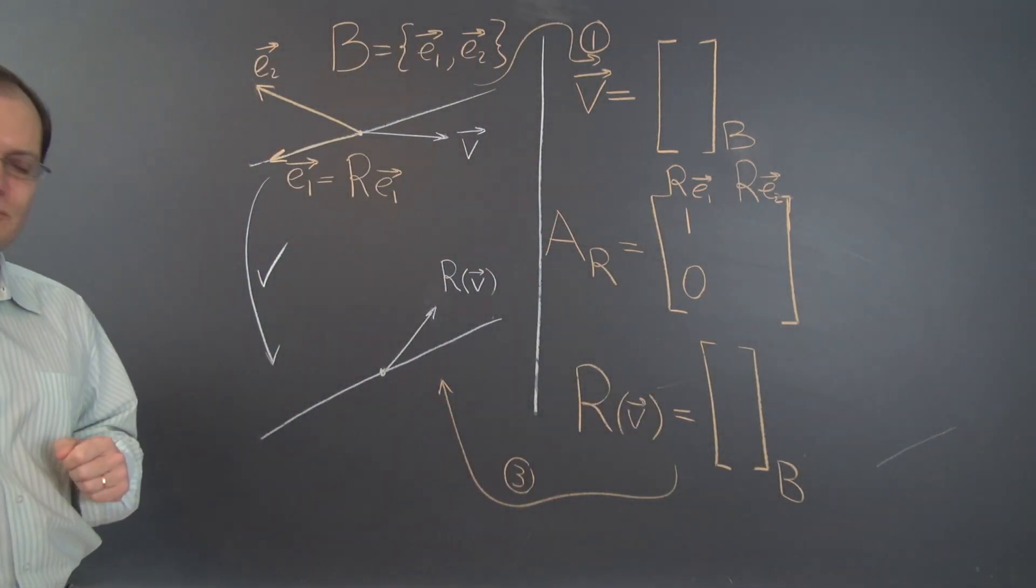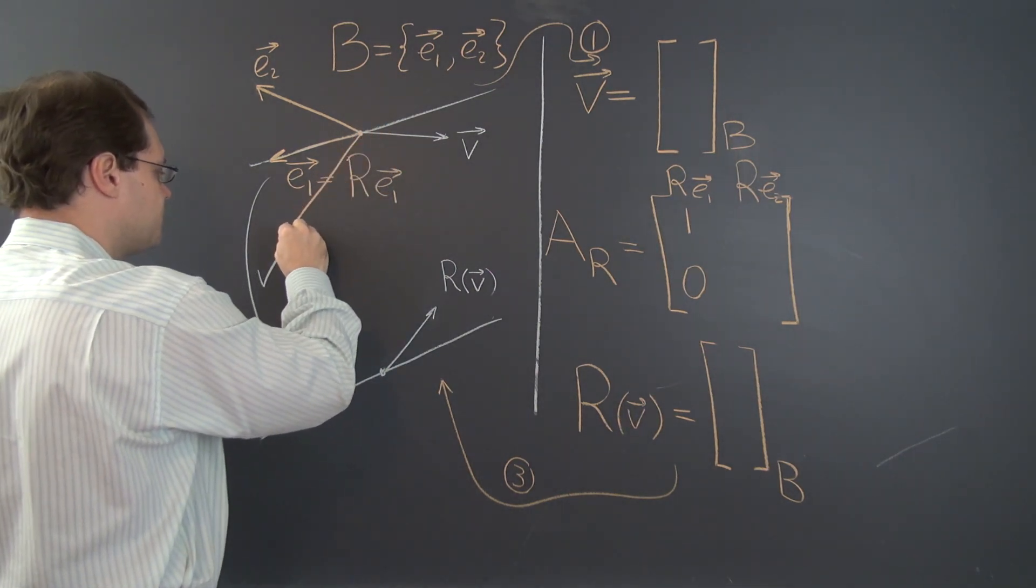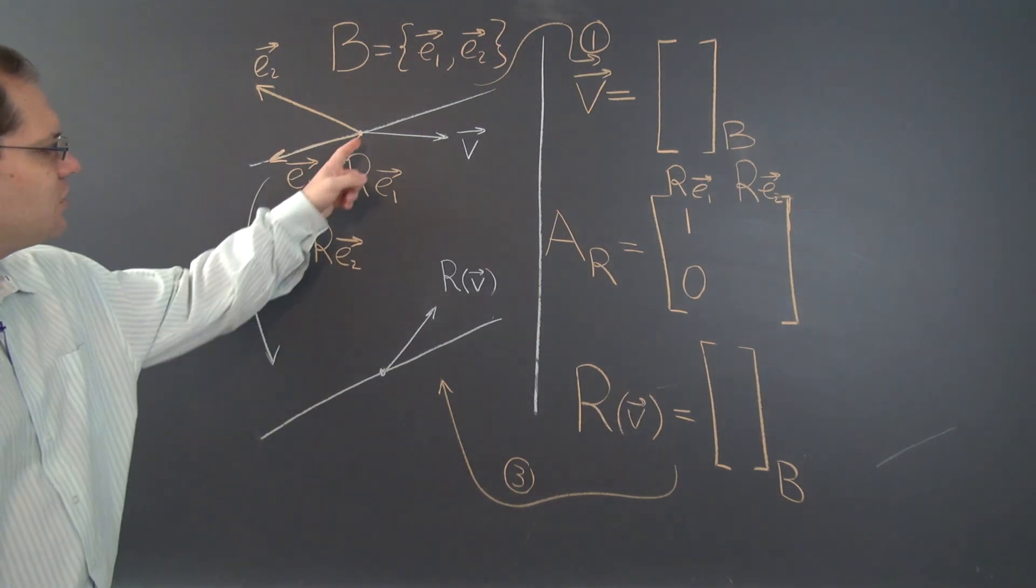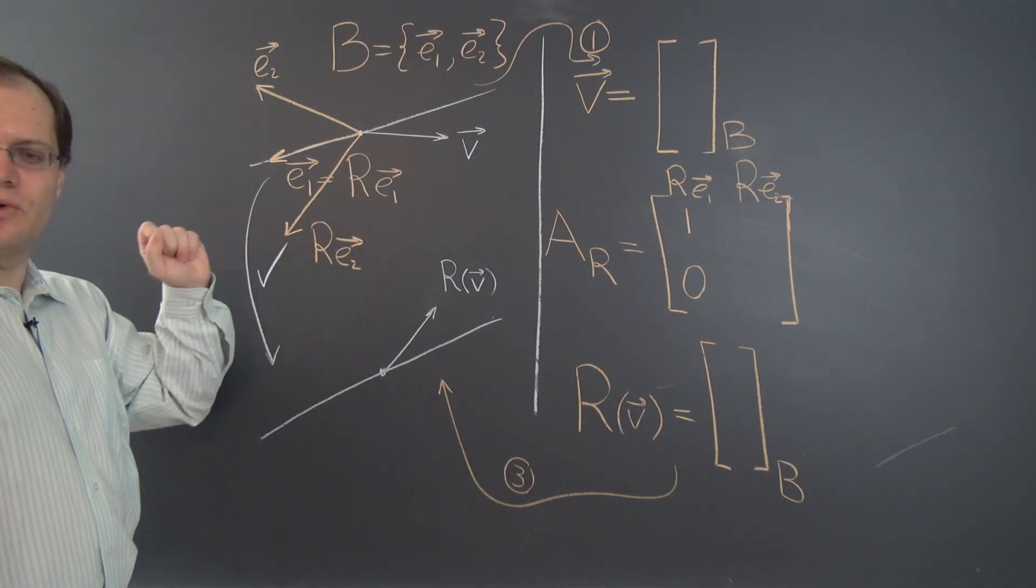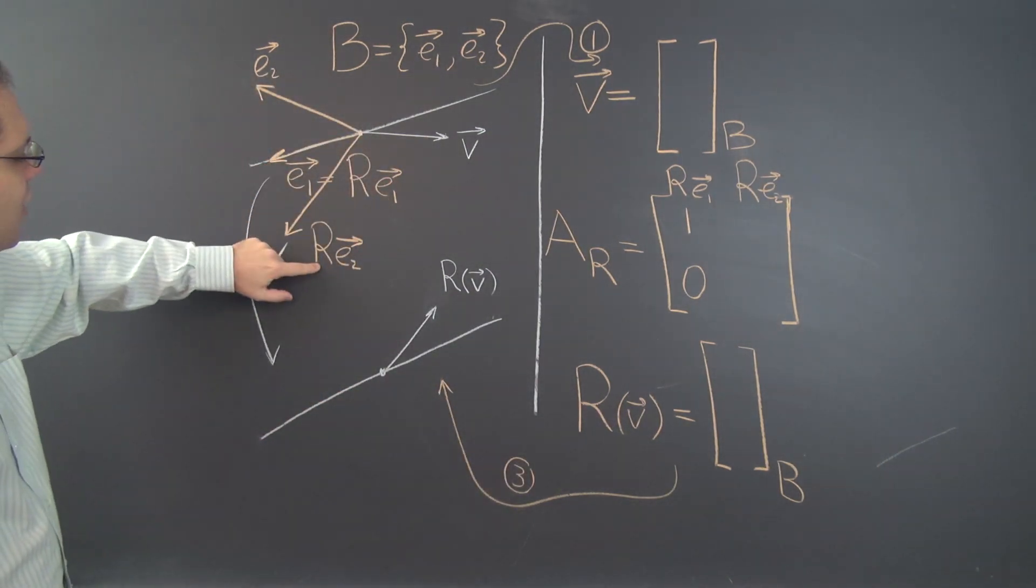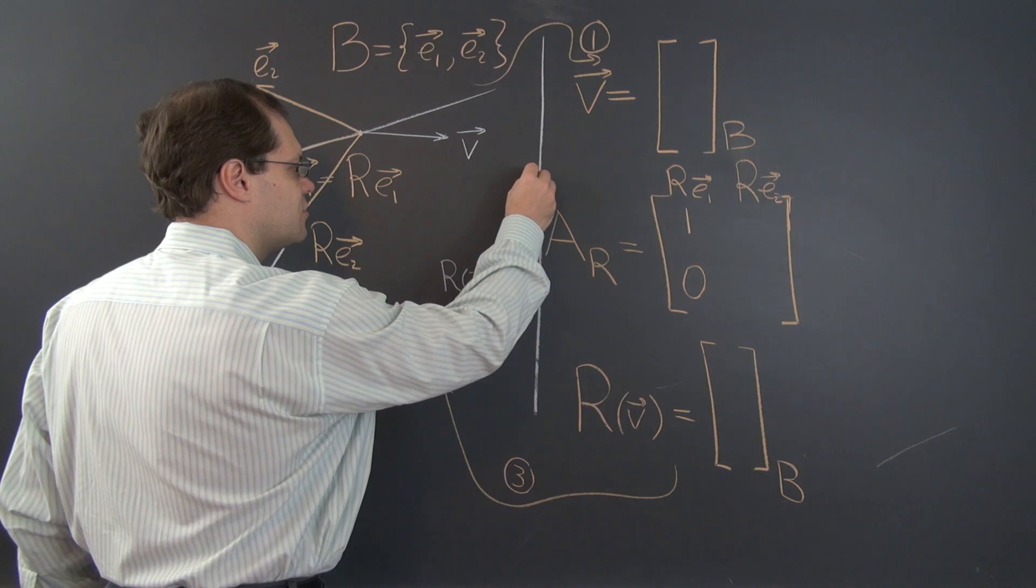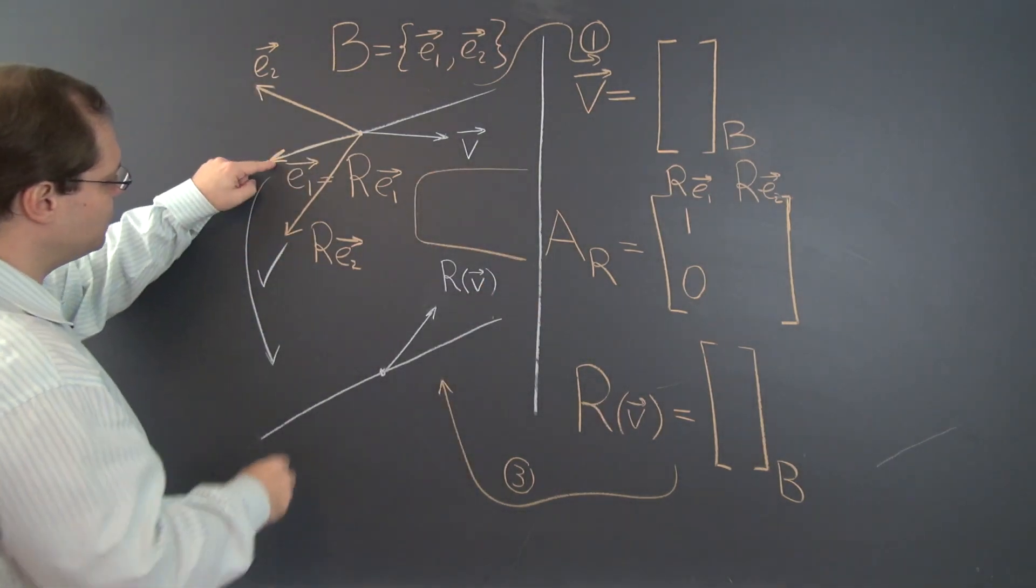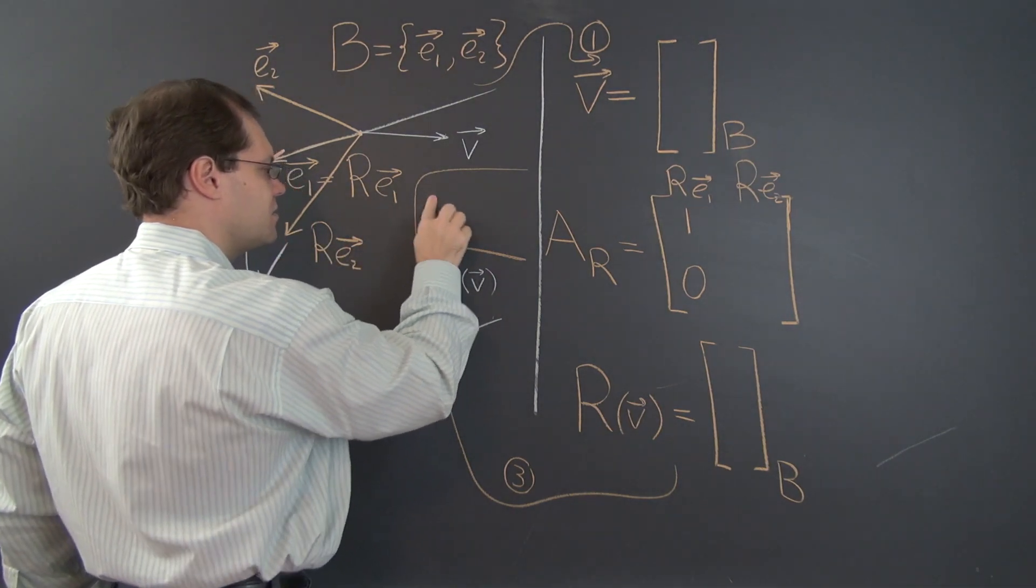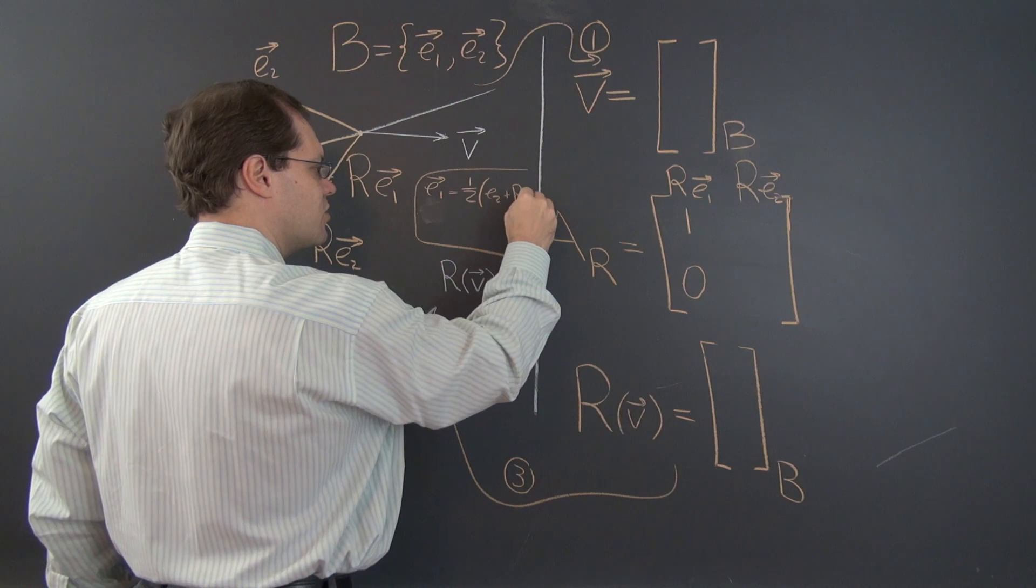Now we have to do the same thing for E2. So let's figure out R of E2. Here it is right here. This is R of E2. And now we have to decompose R of E2 with respect to the same basis. So let's see. How would we do this? So we need R of E2 in terms of E1 and E2. So here's a nice trick for doing it. So we can write that E1 is the average of E2 and R of E2. So E1 equals 1 half E2 plus R of E2.